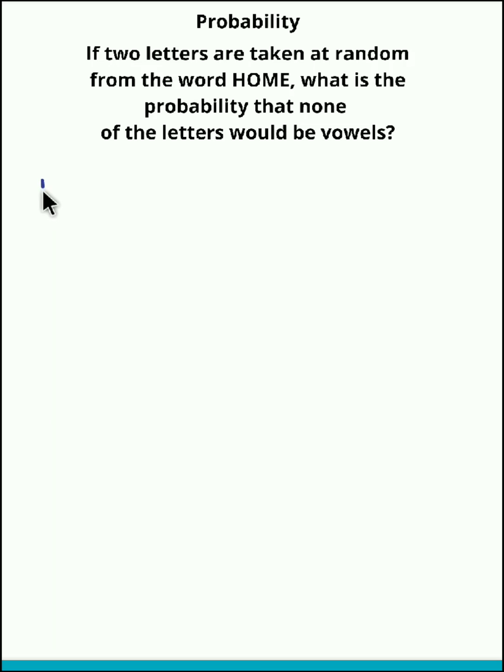Now if we consider the word HOME, there are four letters, right? And here they have given if two letters are taken at random, so we could say the sample space, that is n(S), would be 4C2. From 4 we could make selections of 2 in 4C2 ways.